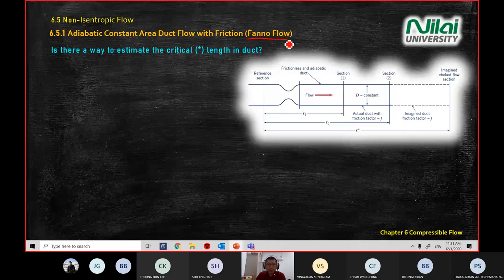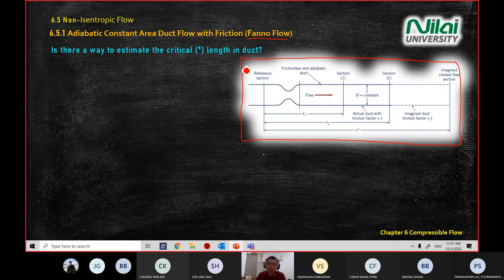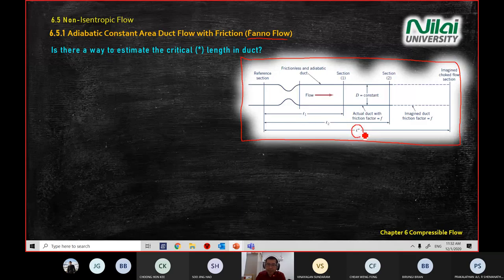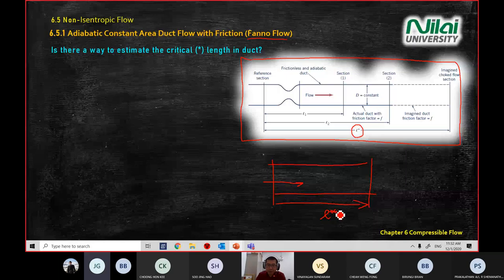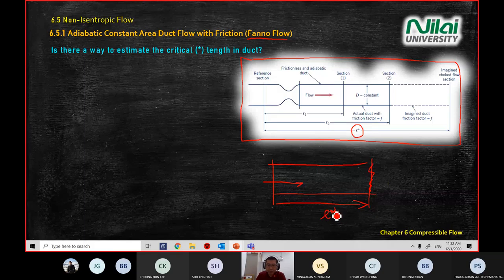The application of Fanno flow is that when we have a long pipe, we need to calculate the critical length before we have choked flow. Imagine a long adiabatic pipe — we want to find the critical length before we get choked flow at a certain length. There is an equation to calculate this critical length.